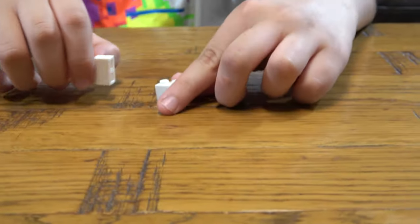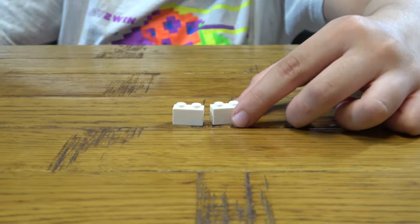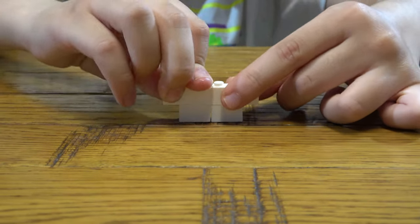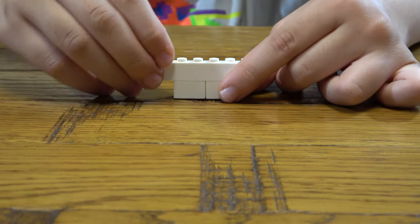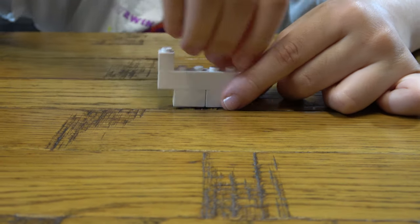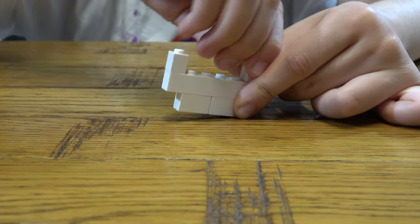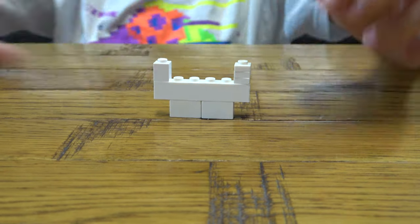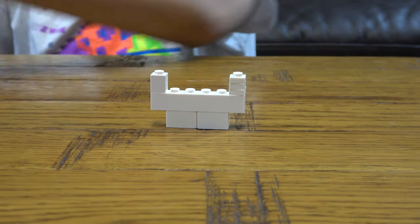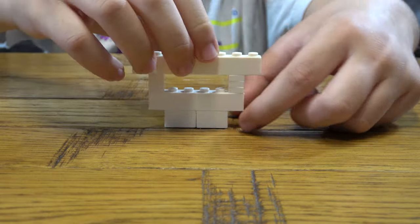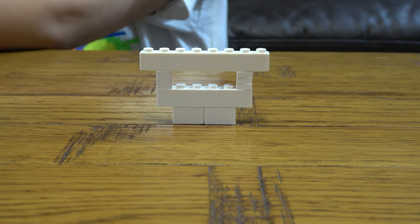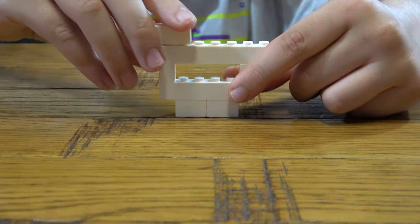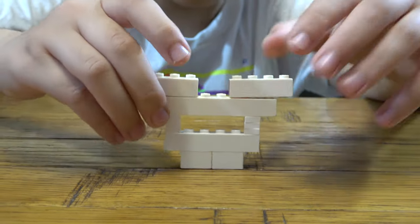First thing we're going to do is build the mouth of the skeleton. We're going to get these two pieces and place this here like so, get one there like this and put another one there. Then next we place this like that, and then we place these two over here like so.